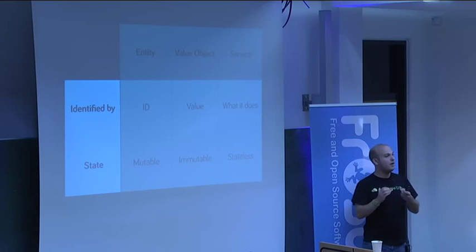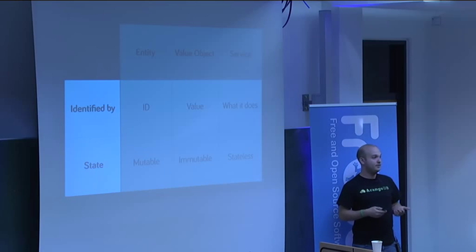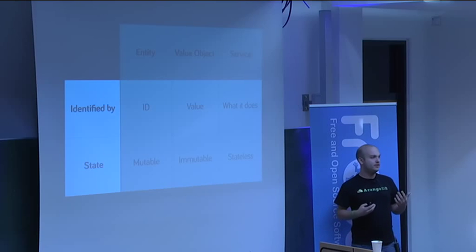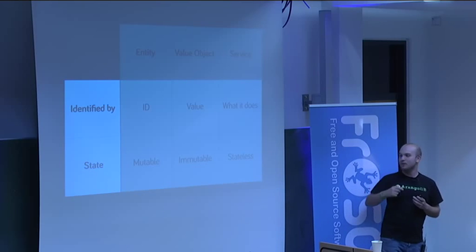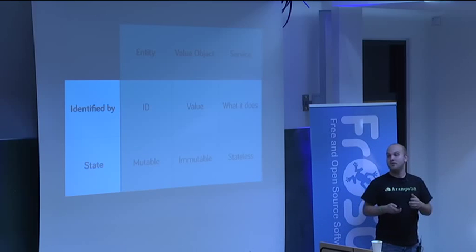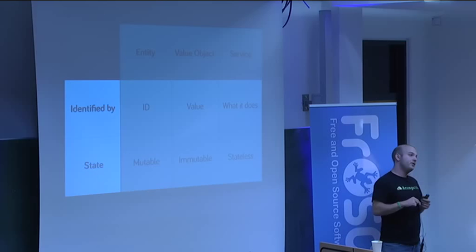If we have two datasets where all values are the same, that doesn't necessarily mean we have the same object. For instance, two people might share the same first and last name but still be different persons. A value object, on the other hand, is only identified by its value. If we have an address consisting of street, street number, and postal code — and two value objects share all of those — they are the same address.